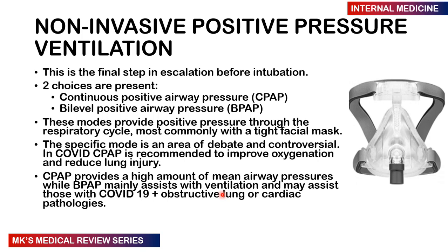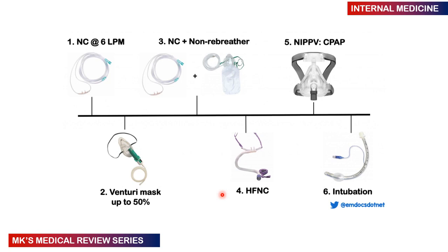I will go into details of CPAP and BiPAP in a later video. If you want that video, please subscribe, hit the bell notification, and drop a comment below. Here is a summary table of everything we've talked about: we start with nasal cannula, escalate to Venturi mask — you can add simple face mask in between — then escalate to non-rebreather mask plus nasal cannula, then high flow nasal cannula, then non-invasive positive airway pressure, and finally intubation if nothing works.